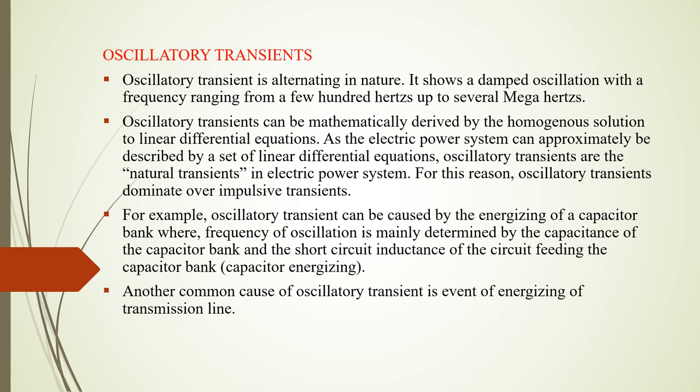What is an oscillatory transient? An oscillatory transient is a composite of a large number of frequency waves that can be of either polarity — positive or negative. The best example of an oscillatory transient is the energizing of a capacitor, because the frequency of oscillation depends on the value of the capacitance. Another common cause of oscillatory transients is the energizing of a transmission line.